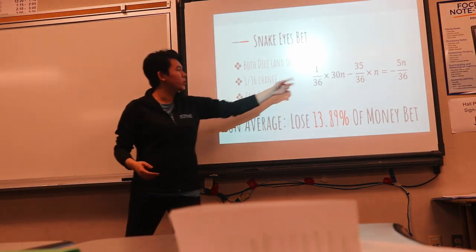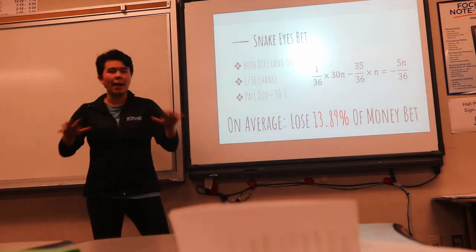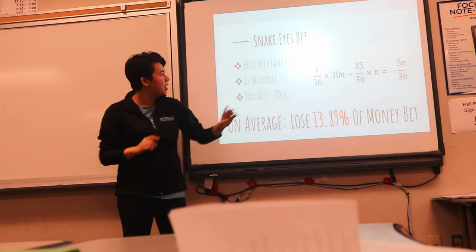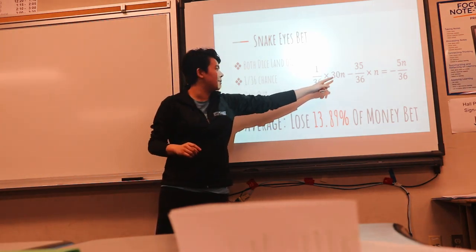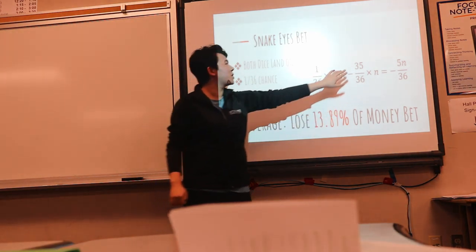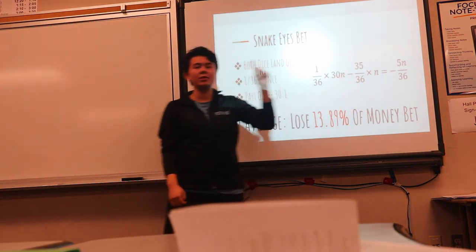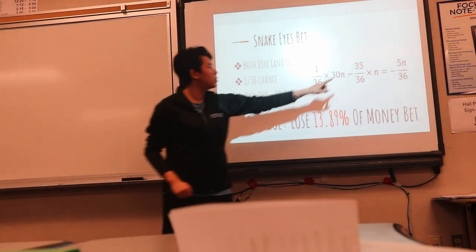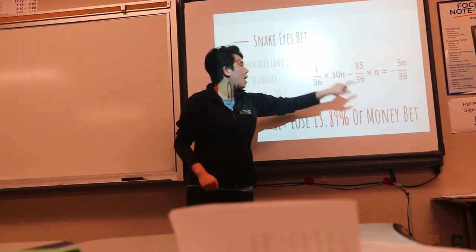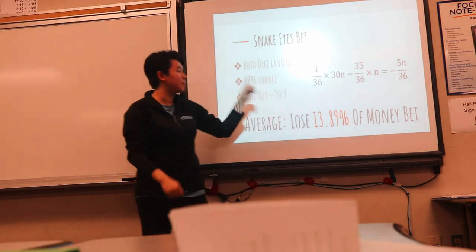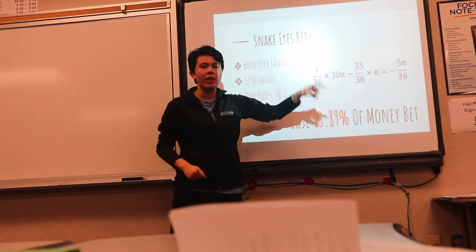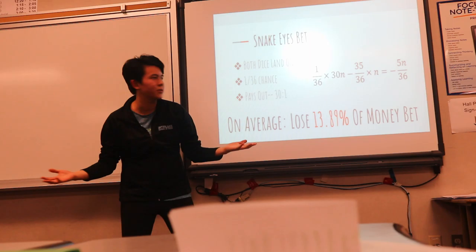So if you lose one every single time both don't have one on the die, you can do that 35 out of 36 times because only one time will you get one and one. So you lose n that many times and then the one out of 36 chance that you get both ones, you make 30n. n is basically the amount of money you're going to bet every single time.